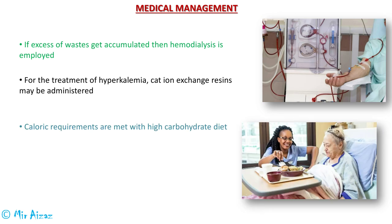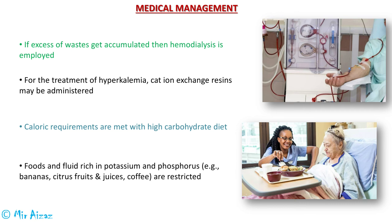In acute kidney injury, energy requirements are increased tremendously, so the patient must be provided with a high carbohydrate diet. To avoid worsening electrolyte abnormalities, foods rich in potassium and phosphorus must be restricted, including bananas, citrus fruits, juices, and coffee.